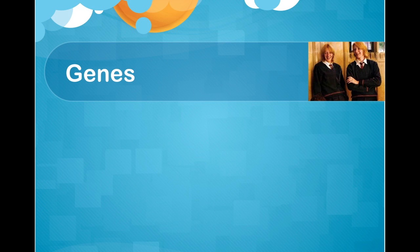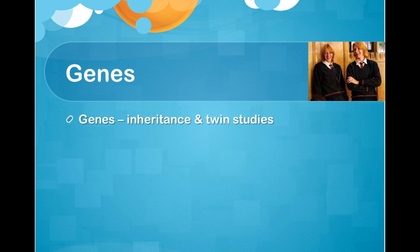Starting with genes — a good place to start with the biological approach. Taking a biological approach to psychology is different to other approaches. The behavioural approach looks at how we learn behaviours from the environment; the cognitive approach looks at thinking processes. The biological approach says the reason we act or think the way we do isn't necessarily to do with what we've learnt, but more to do with what's biologically programmed into us — and one way of looking at that is genes.